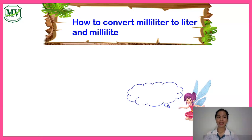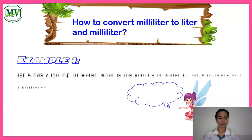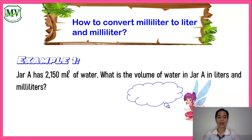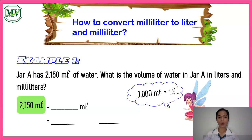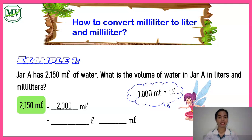Now let us convert milliliters to liters and milliliters. Let's take a look at this example. Jar A has two thousand one hundred fifty milliliters of water. What is the volume of water in Jar A in liters and milliliters? We know that one thousand milliliters is equal to one liter. We can rewrite two thousand one hundred fifty milliliters as two thousand milliliters plus one hundred fifty milliliters.